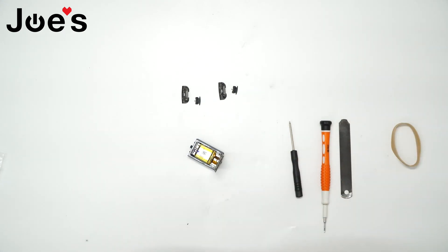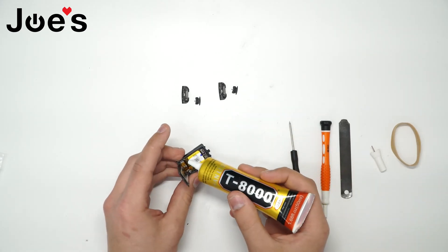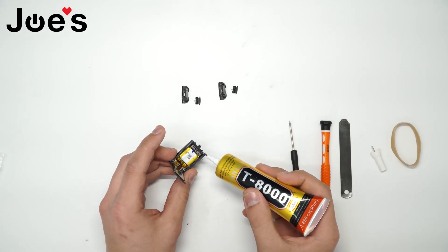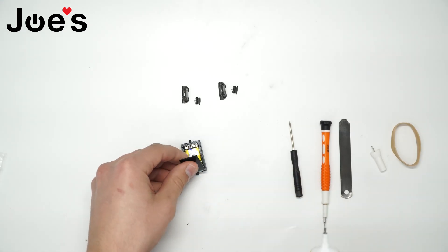And once you have it there, go ahead and just go around with B7000 or T8000. We used to use B7000. Just put a good little layer of glue; that's good enough.